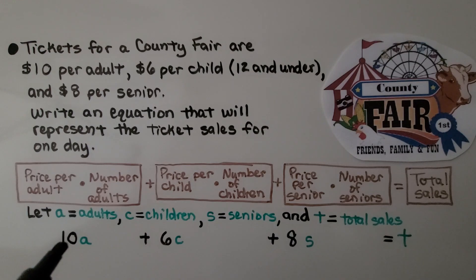It's $10 per adult, so we can write 10A. We're going to add it to the price per child, 6, times the number of children, C. We're going to add that to the price for seniors times the number of seniors, and that's going to equal T, the total sales.